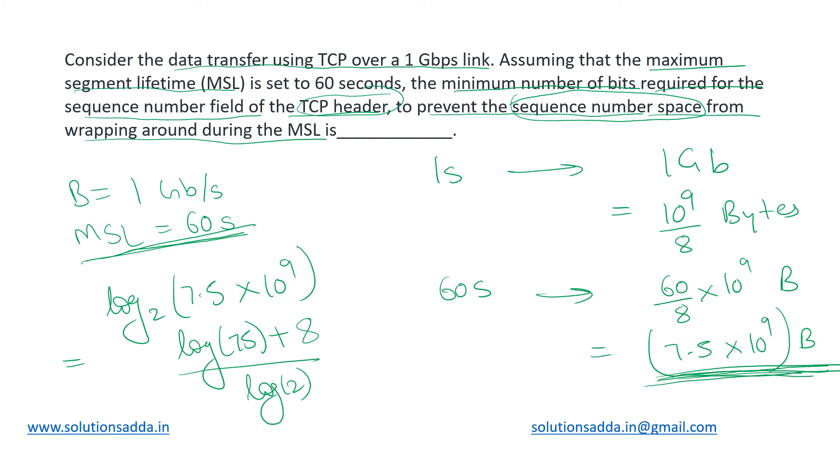Then when we evaluate this, we get the result as something around 32.8. But this is not the number of bits we can have. So we will have to take ceiling of this, and hence that will give us 33.